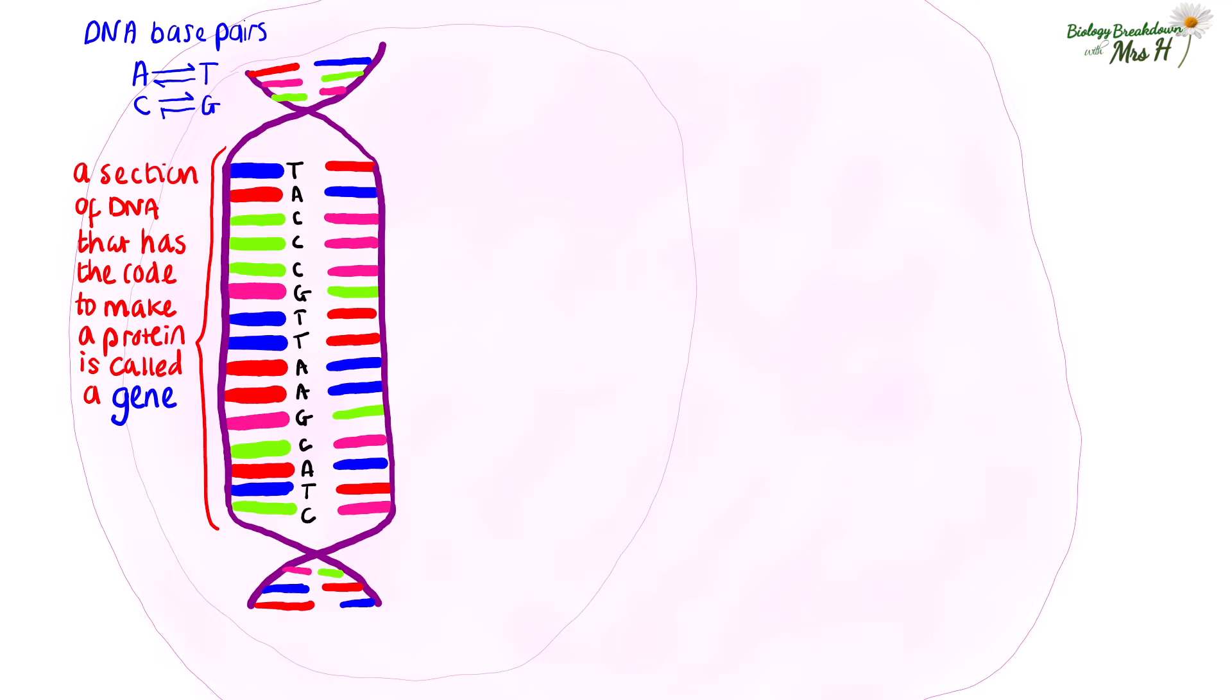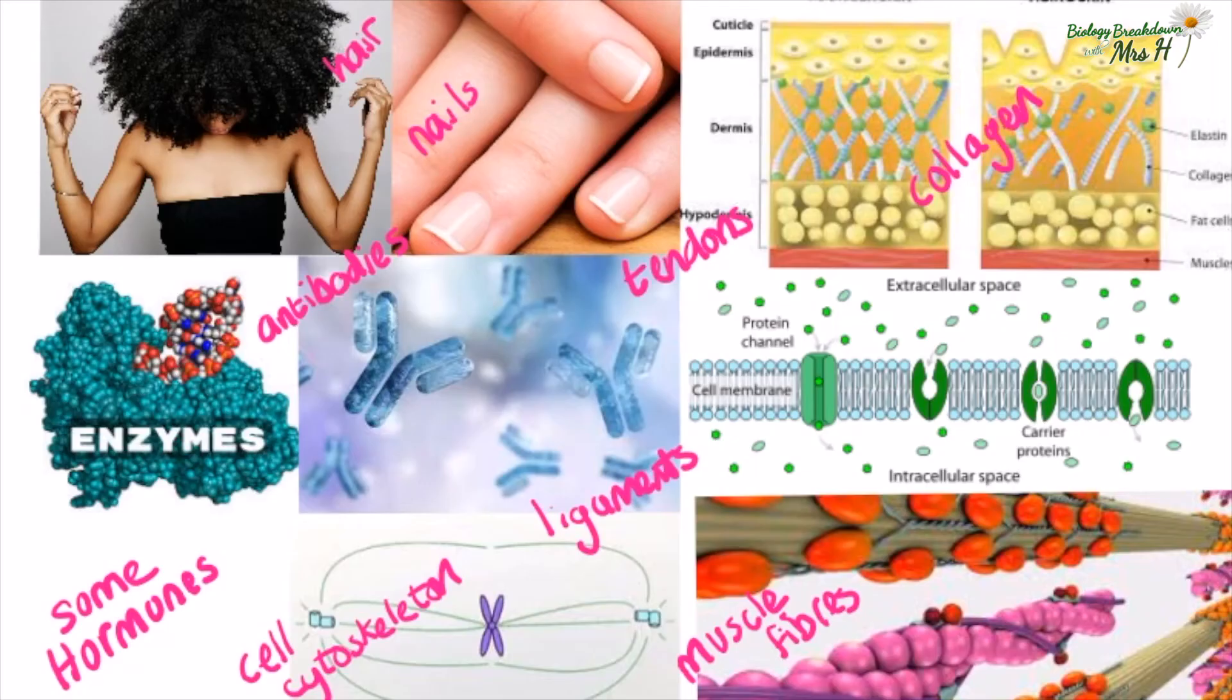It is important we make proteins as we are essentially made up of many proteins. For example, hair, nails, collagen in skin, fibers in muscle cells, fibers involved in mitosis and meiosis, enzymes, antibodies, transport proteins in the cell surface membranes, some hormones, tendons, ligaments and the list goes on.